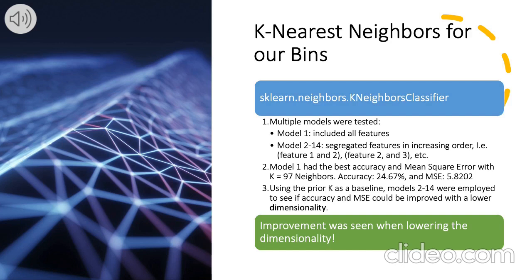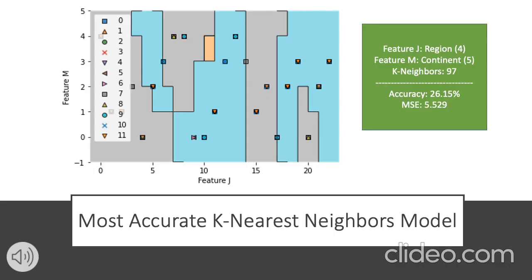Although these numbers are not great, the indication that 97 neighbors was most appropriate when including all features allowed us to create segregated models with an increasing order using only two features at a time. For example, feature 1 and feature 2 were a separate model, then feature 2 and feature 3, all the way up to feature 14 and 15. This process, while redundant, did in fact improve our model prediction and lower the MSE — possibly because lower dimensionality improved the model.